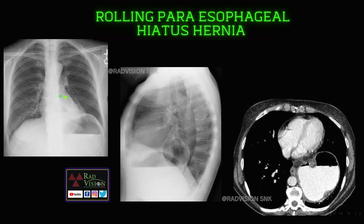Next, you can see a retrocardiac density with air-fluid levels. Here also you can see air-fluid levels in the retrocardiac region. There is the stomach herniating into the thorax in a paraesophageal location — this is a rolling paraesophageal hiatus hernia.